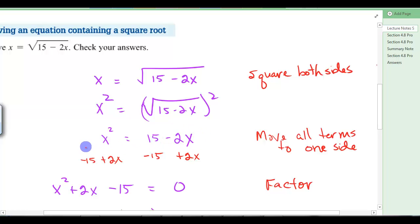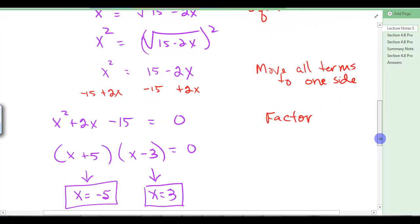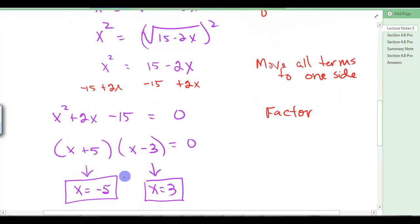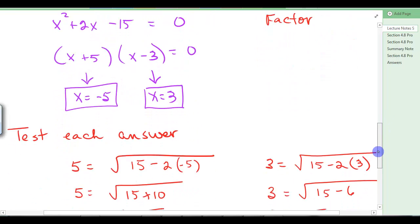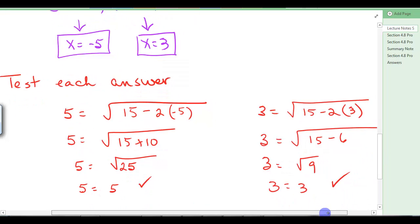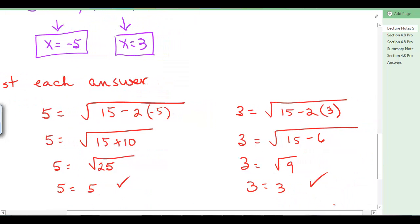Then we're going to move everything to the left and get 0 on this side. So I did that with the red there. So now I have a quadratic. I can factor and I get x equals negative 5 and x equals 3.